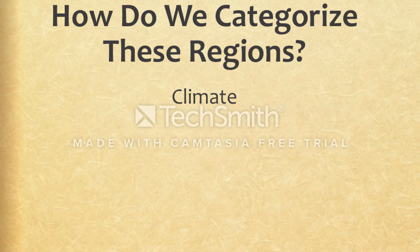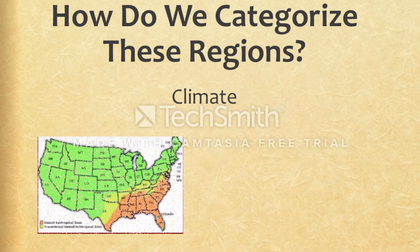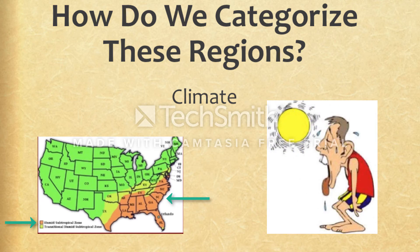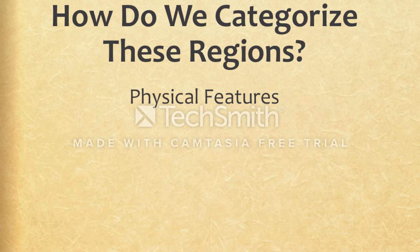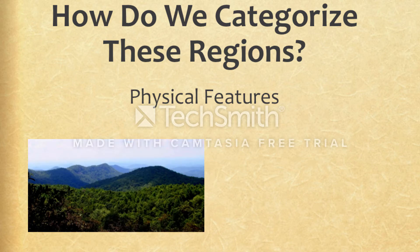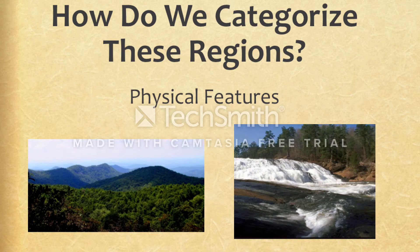Climate is weather over time. Can you find South Carolina on the map below? Can you tell what type of climate we have? Does our weather make you feel like this poor guy in this graphic? The physical features are the landforms in an area. I wonder which region we would find these mountains in, or how about these rapids?